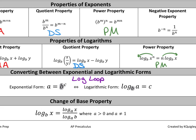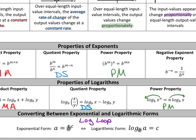The change of base property allows us to write any logarithm in terms of something you can type into a regular calculator. You take the logarithm of the argument as the numerator and the logarithm of the base as the denominator, choosing whatever new base you want for both. Argument goes on top, original base goes on bottom. That said, this is less important than your exponent and logarithm properties — focus on those.